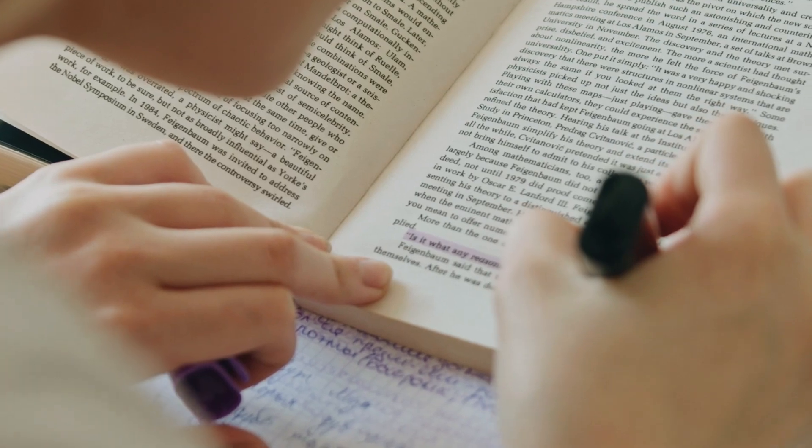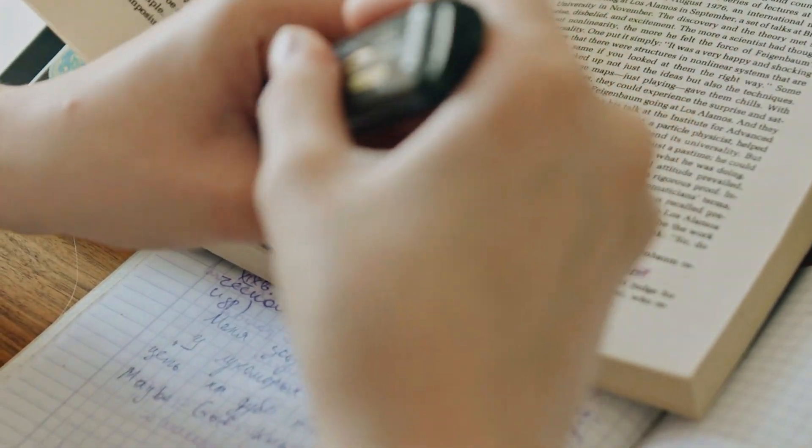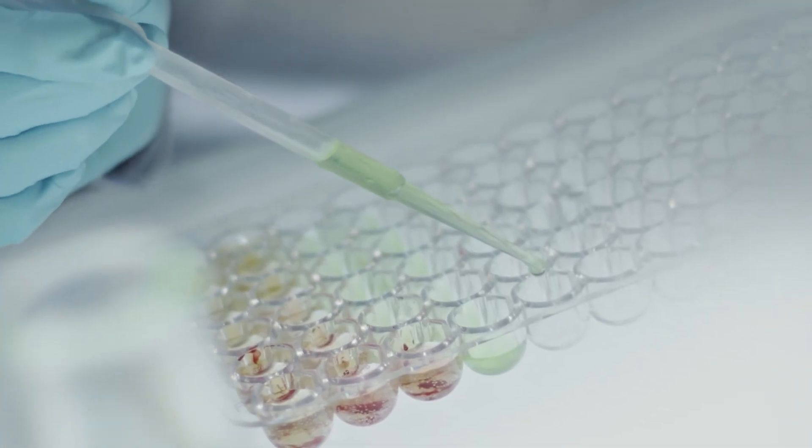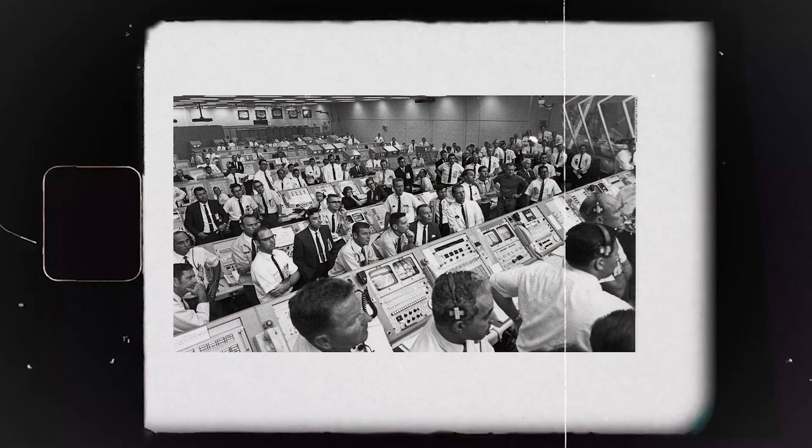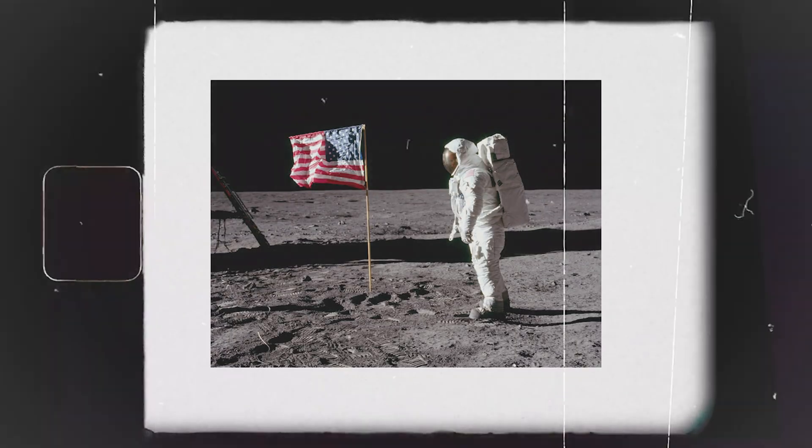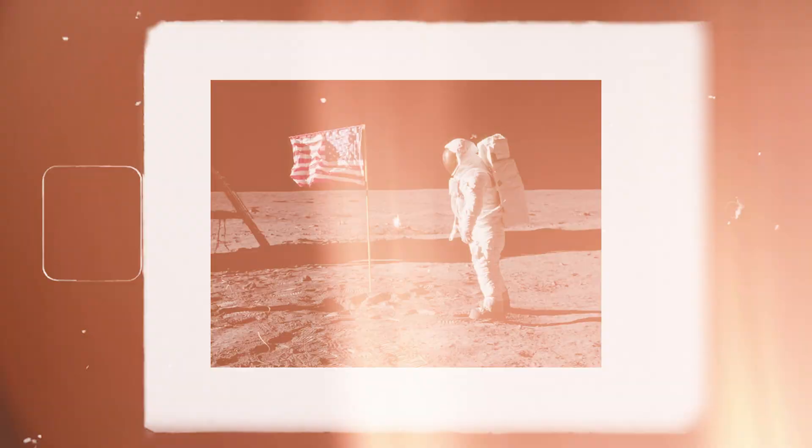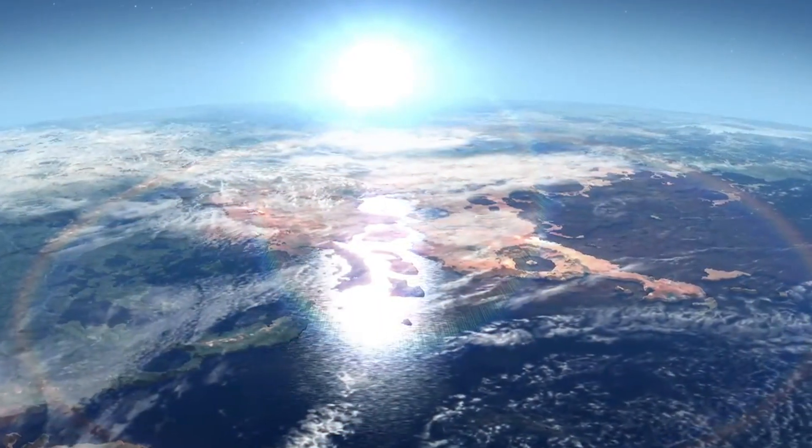However, a recent study published in the Scientific Journal of Proceedings of the National Academy of Sciences suggests that the theories may be incorrect. An examination of moon rocks from the Apollo missions of the 1960s and early 1970s reveals that the Earth most likely formed with water.